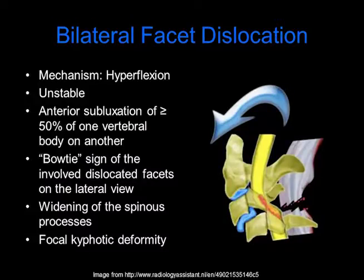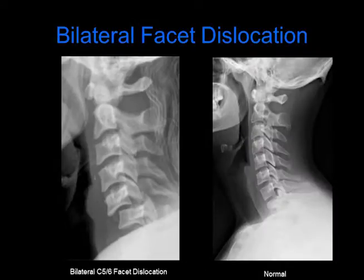Bilateral facet dislocation occurs with hyperflexion. This is an unstable injury and is associated with anterior subluxation of greater than 50% of one vertebral body on another. We see the bowtie sign of the involved dislocated facets on the lateral view, as well as widening of the spinous processes and a focal kyphotic deformity. On the left, we have a radiograph of bilateral C5-6 facet dislocation, showing anterior subluxation of C5 on C6. The posterior elements at the C5-6 level look like a bowtie — this is called the bowtie sign.